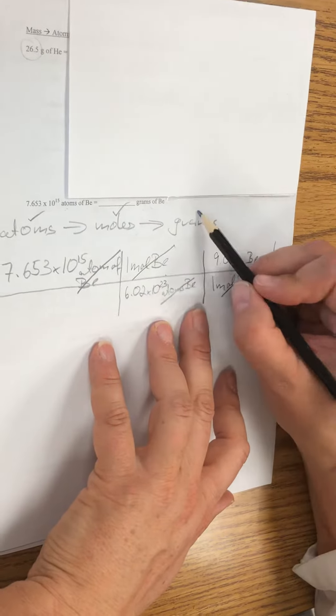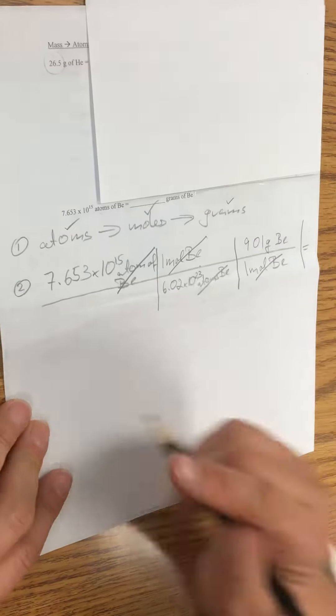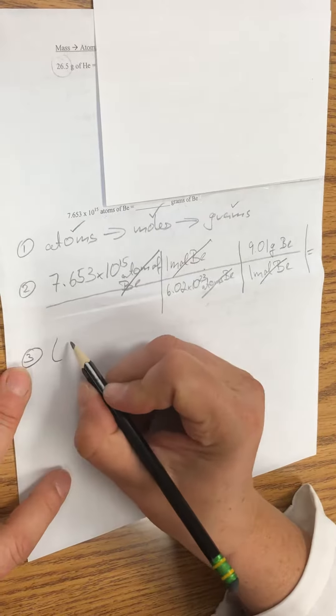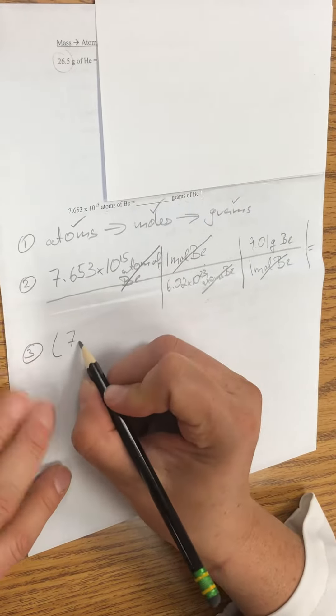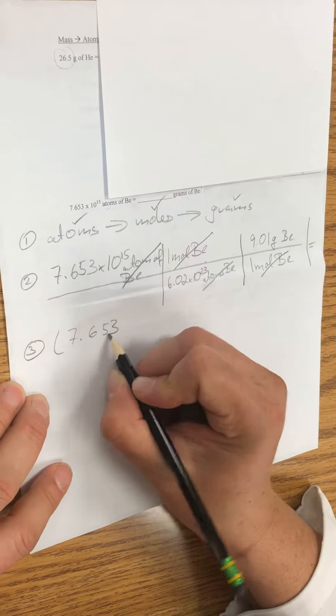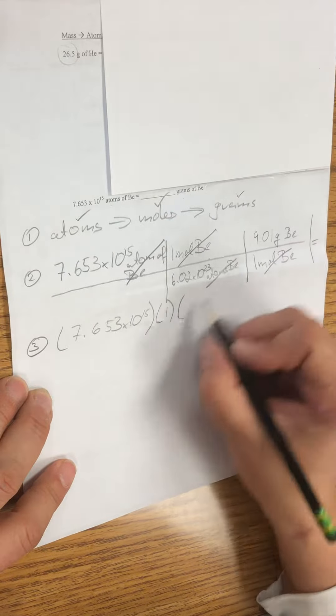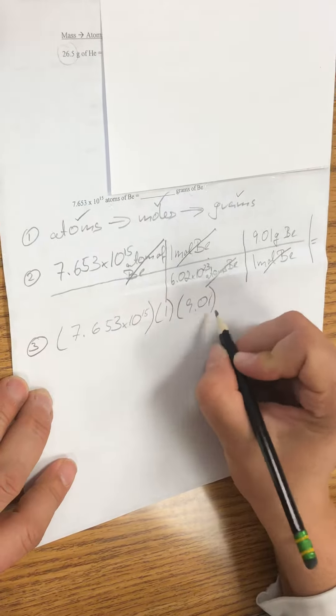For number three, you write down how you plug it in. So 7.653 times 10 to the 15th times 1 for the mole times 9.01 for the beryllium.